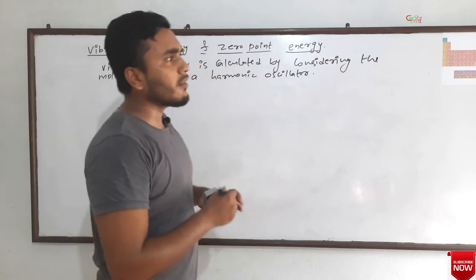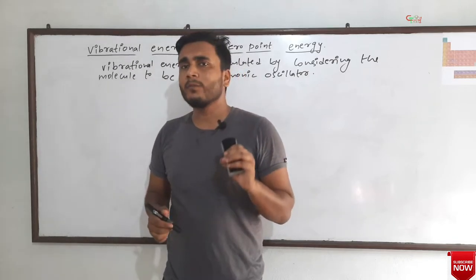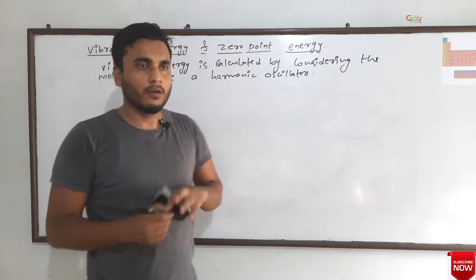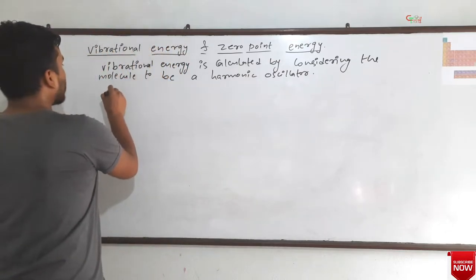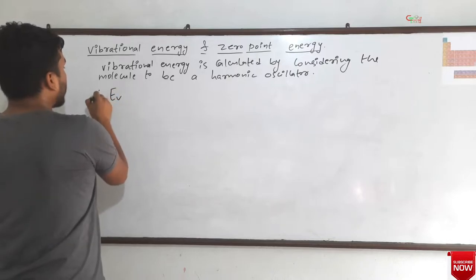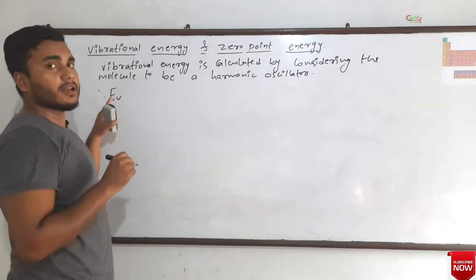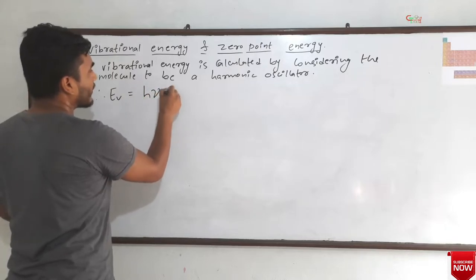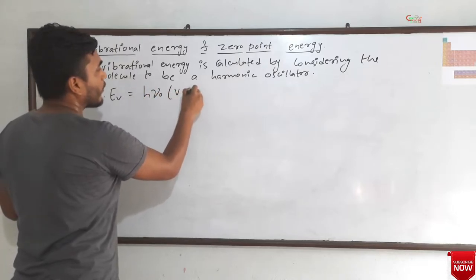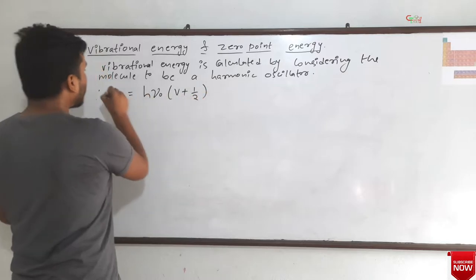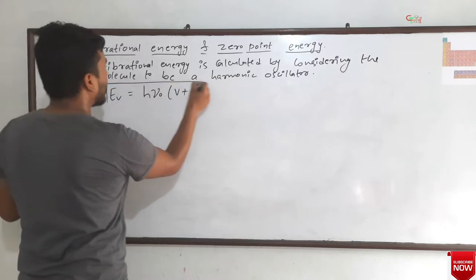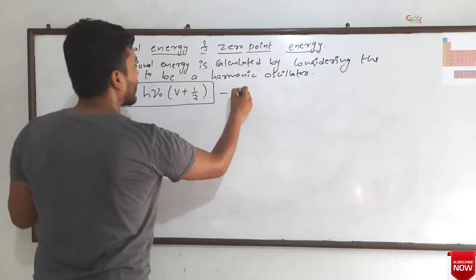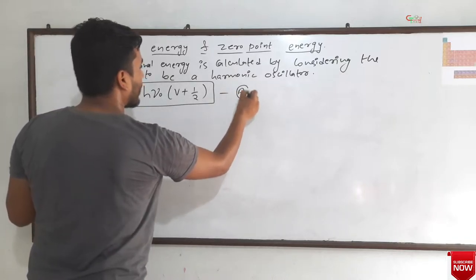By using this condition, we get a formula for the energy of the vibrational level. That formula is: E_V (vibrational energy) is equal to hν₀(V + 1/2). This is the formula for the vibrational energy. Let's consider it to be equation number A.